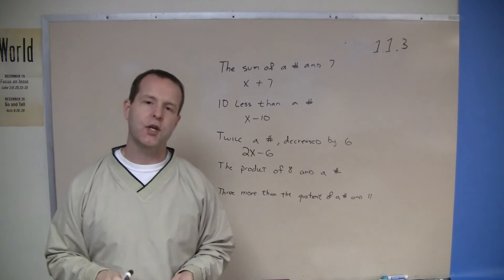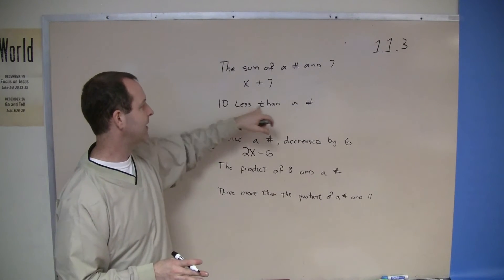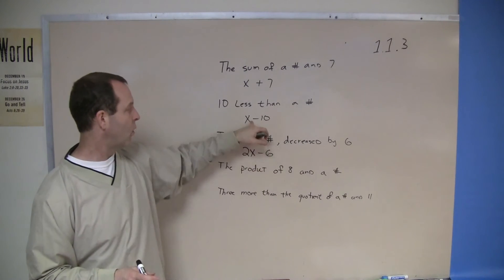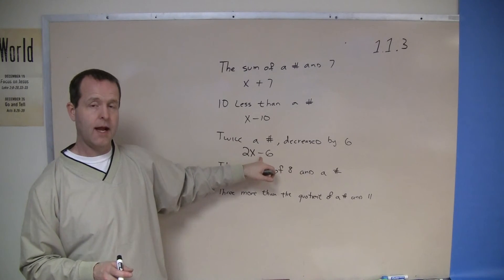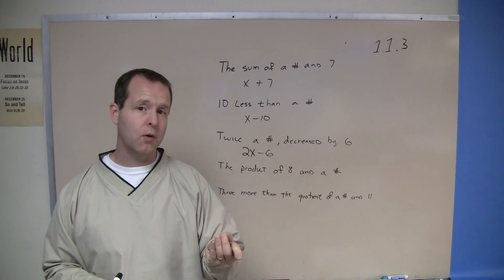One of the things that you're going to have to wrap your head around a little bit is the difference between ten less than a number or a number decreased by six. Notice that they both involve subtraction, and because it involves subtraction, it does matter the order the number goes in.